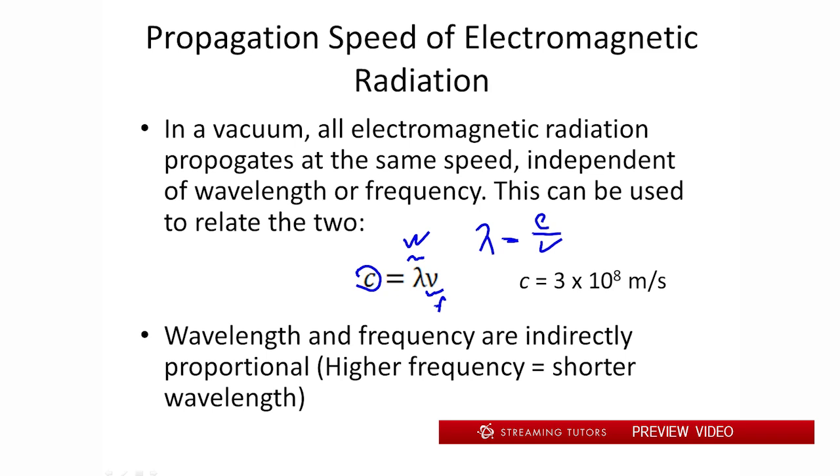And another important thing to note is that these two are indirectly proportional to one another. So that means higher wavelengths mean lower frequency and vice versa. And that makes sense. If you have a longer distance to travel in a given amount of time, you're going to get through less cycles of that given time, right?